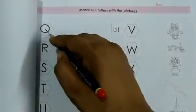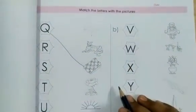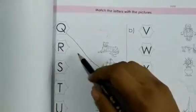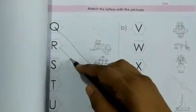Let's start Q for quilt. Quilt means what? Do you know? Quilt means left. R for rose. Here is rose.